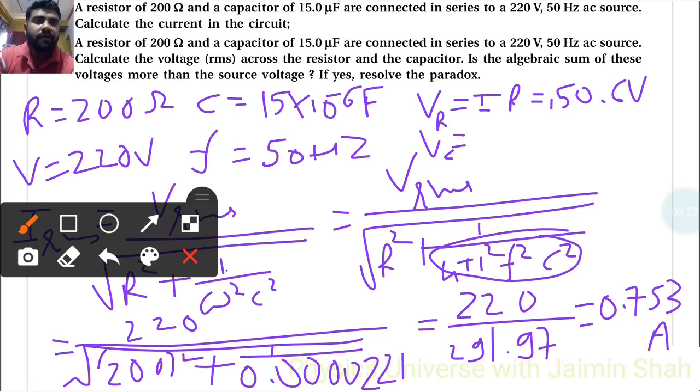0.753 into R, resistance is 200, so that is 150.6 volt across resistance. Now across capacitance, V_C equals I into Xc, I into Xc means 1 upon omega square C square, so 0.753 upon 2 pi f into C. 0.753 upon 2 upon 3.14 upon f is 50 upon C, 15 into 10 raised to minus 6, so 10 raised to 6. That is 159.87, so V_C is 159.87 volt.